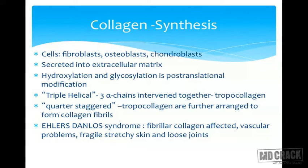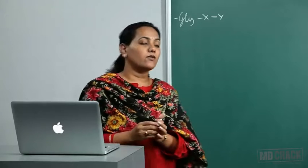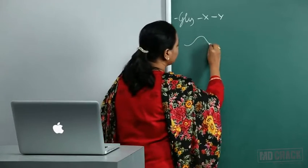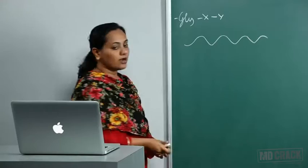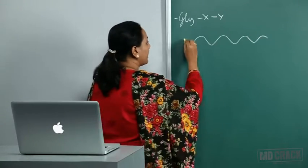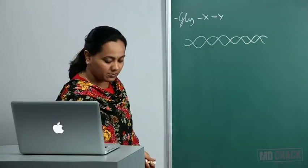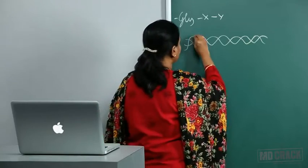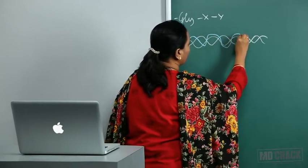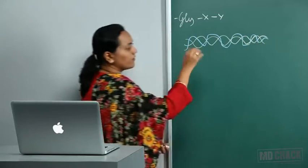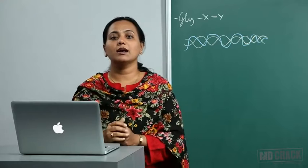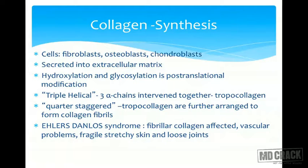To give an overview of the structure of collagen, we call it a triple helical structure. The three alpha chains of collagen are not just one helix — each of the chains moves around each other, forming a different structure called the triple helical structure. These three alpha chains intertwined together is called tropocollagen.